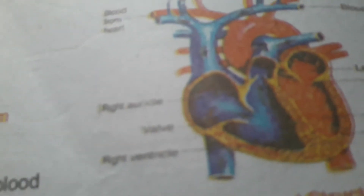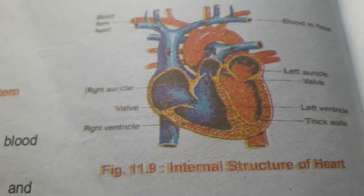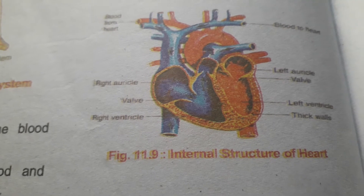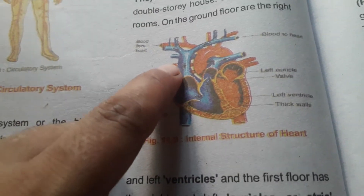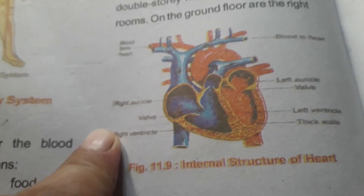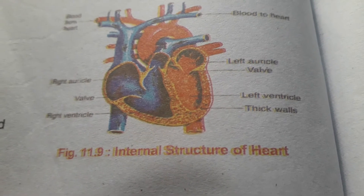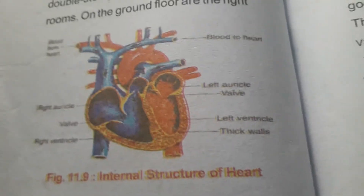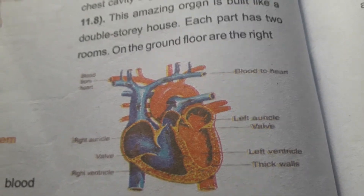The right auricle and left auricle are the upper chambers, and they are separated from the ventricles by valves. The valve between the right auricle and right ventricle is called the tricuspid valve. The valve on the left side is called the bicuspid valve. The large artery connected to the heart is called the aorta.